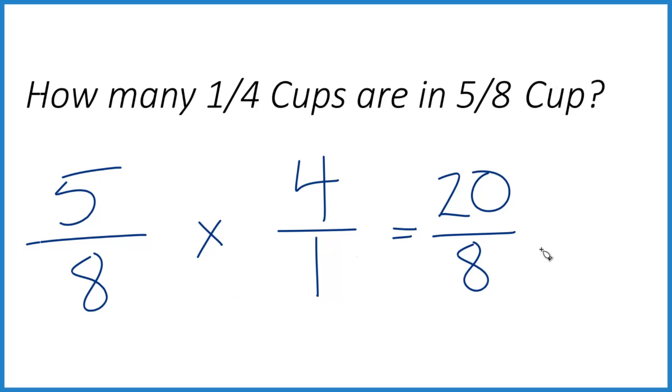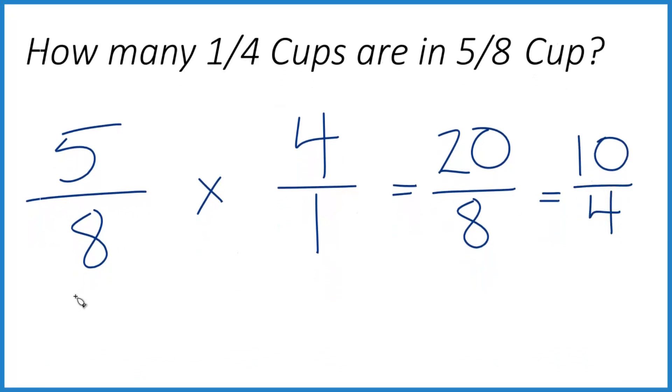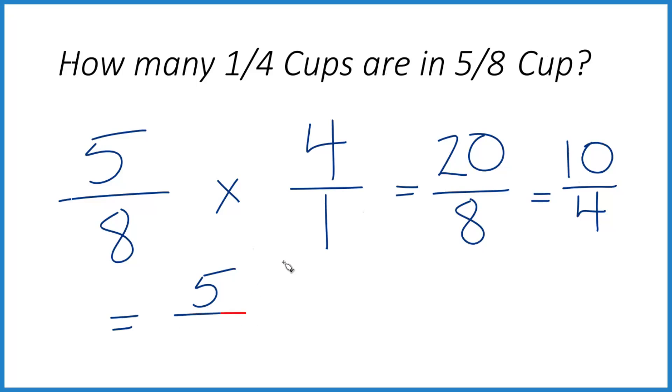Let's simplify it down. If we divide the top and bottom by two, twenty divided by two is ten, eight divided by two is four. We can reduce that even further. Divide by two again. Ten divided by two is five, and four divided by two is two. So that becomes five halves.